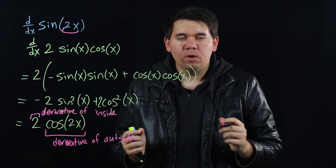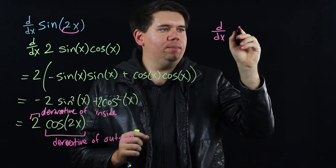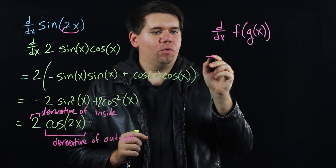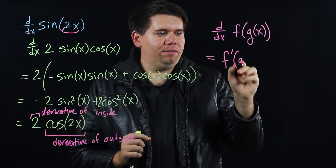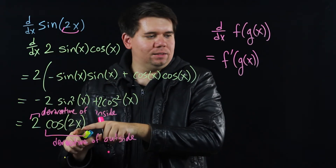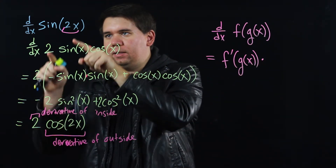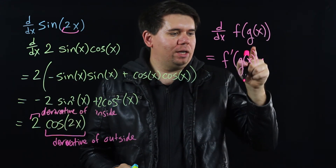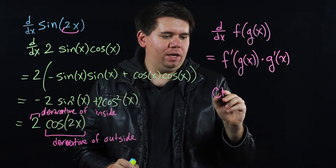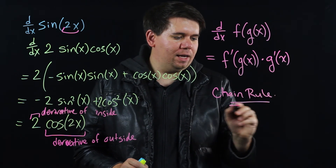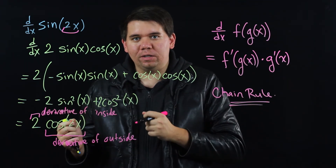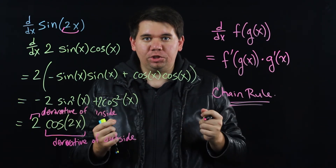We're beginning to see a pattern. Whenever we take the derivative of some function g of x inside of some other function f, we take the derivative of the outside, leave the inside the same — we took the derivative of sine to make it cosine and left the 2x inside the same — but then we multiply by an extra piece: the derivative of whatever is inside. We call this the chain rule. In upcoming videos, we'll justify it more fully and give more examples of how to use the chain rule to find the derivative of a composition of two functions.